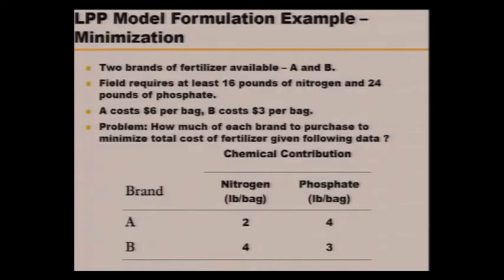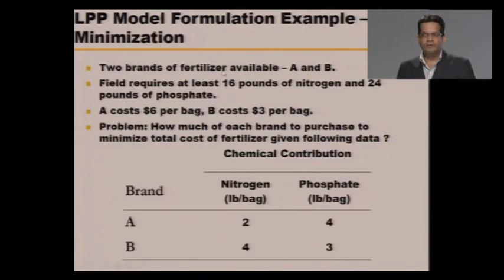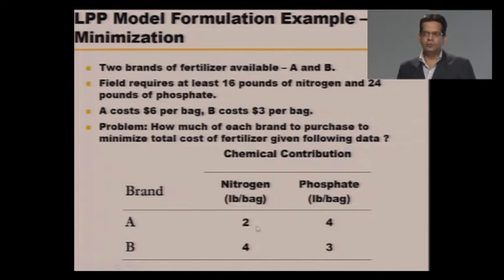Now we consider the minimization LPP formulation. We are given two brands of fertilizer, A and B. The field requires at least 60 pounds of nitrogen and 24 pounds of phosphate. Brand A costs $6 per bag and Brand B costs $3 per bag. Brand A has 2 pounds of nitrogen and 4 pounds of phosphate per bag. Brand B has 4 pounds of nitrogen and 3 pounds of phosphate per bag. The problem is: how much of each brand should be purchased to minimize total cost?